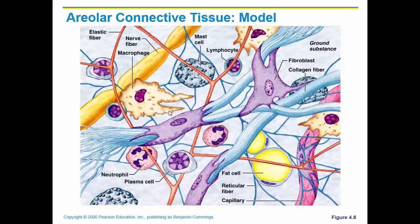This is just one of the types of tissue — it's showing you a drawn picture with the different types of cells, the plasma cells, elastic fibers, et cetera. We will be identifying the different types of connective tissue underneath the microscope.